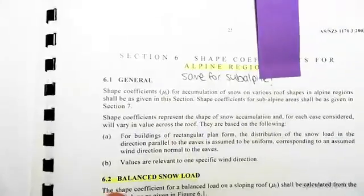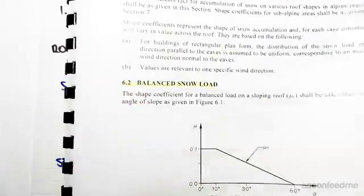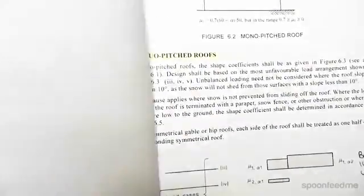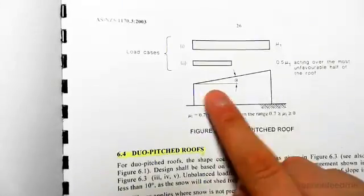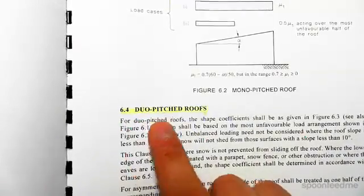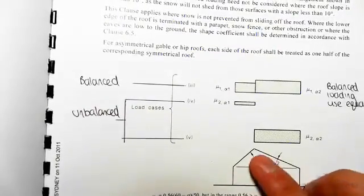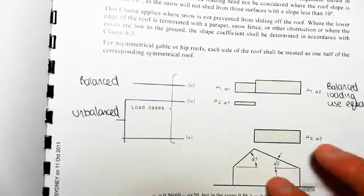regions. Now 6.2 is balanced snow load, 6.3 is mono pitched roofs, okay, so mono pitch roof is like that, it's just got one pitch, and 6.4 is duo pitch roofs which looks like that, okay, which is actually our case here, we have a duo